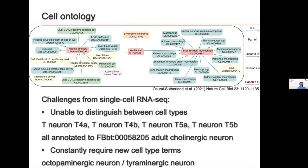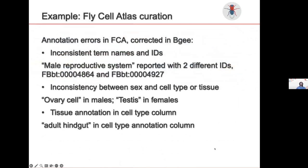We constantly require new cell type terms because new cell types are simply being discovered. For example, the distinction between octopaminergic and tyraminergic neurons is not yet in the Cell Ontology. Currently curating the Fly Cell Atlas, we found errors to correct: the male reproductive system was reported with two different identifiers when it should be consistent, ovary cells were annotated in males or testis in females — clear reporting errors. Sometimes an organ or tissue is reported instead of a cell type; adult hindgut is not obviously a cell type, so we have to go back and recreate this systematically.